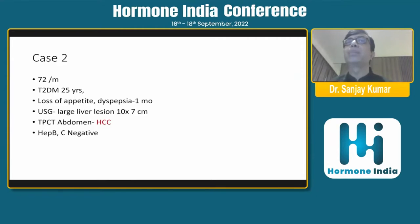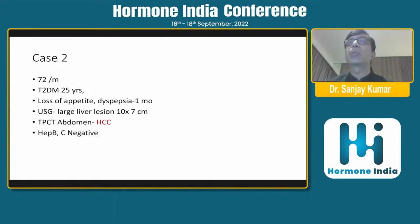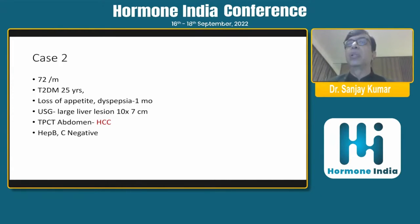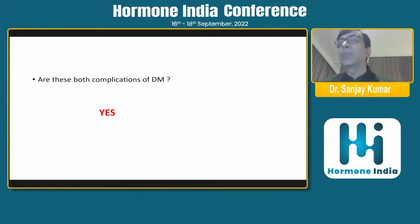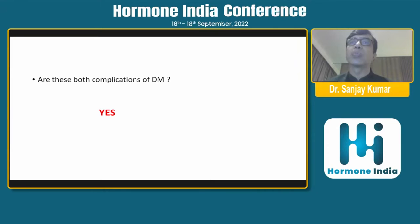Another case: a 72-year-old male who was a diabetic for 25 years developed some loss of appetite and dyspepsia for one month. When he was evaluated by ultrasound, it showed a large liver lesion of 10 by 7 centimeters. Triple-phase CT abdomen showed it was hepatocellular carcinoma. He was hepatitis B and C negative. So, are these both complications of diabetes mellitus? A very big yes — these are complications of diabetes mellitus. They can develop fatty liver, cirrhosis, and hepatocellular carcinoma.